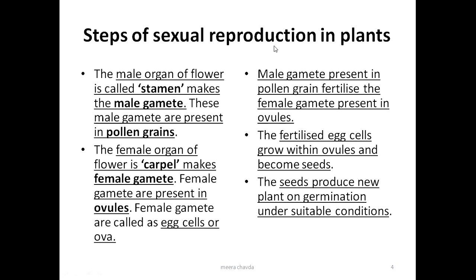Steps of sexual reproduction — how seeds are formed. The male organ in a flower is called the stamen. This male organ contains the male gamete, which is present inside the pollen grains.